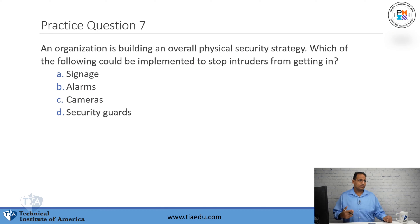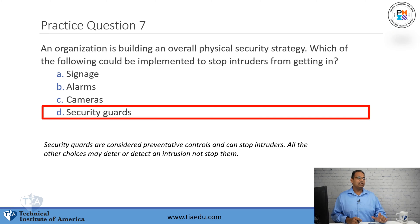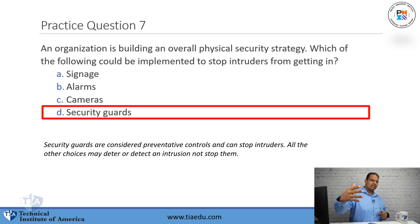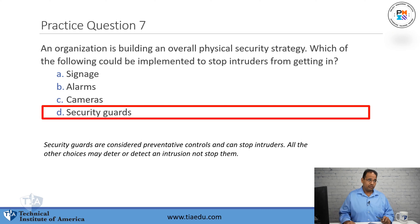Question number seven: an organization is building an overall physical security strategy. Which of the following could be implemented to stop intruders from getting in? A, signage. B, alarms. C, cameras. D, security guards. The answer is security guards. Security guards are considered preventive controls — they can actually stop somebody from coming in. A sign, alarm, or camera doesn't have hands to physically stop a person like a security guard could. Signs, alarms, and cameras could deter people and scare them off, but not prevent them.